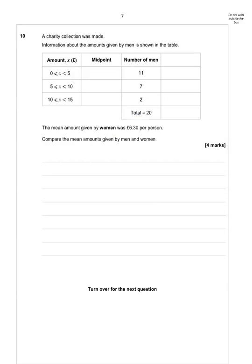Okay, so this question is about finding the mean, and they've been really kind to us here because they've set the table up and everything. So to start with, I'm going to find the midpoint of all these groups. Now, halfway between 0 and 5 is 2.5.